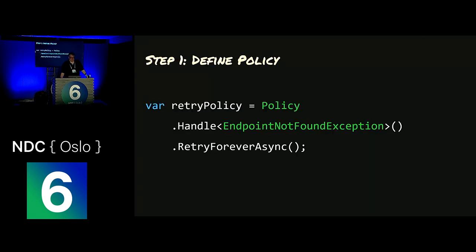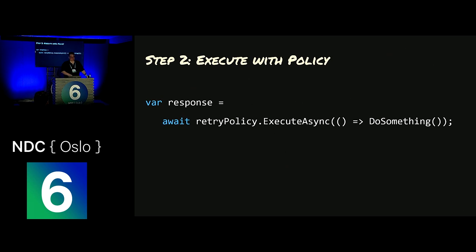Here's the simple syntax. Step one, you define the policy — and this policy is just an object. Once you have this policy and you define what exceptions you want to handle and what the resilience strategy is, then whatever code you want to run, you run within the context of the policy using execute async right there.